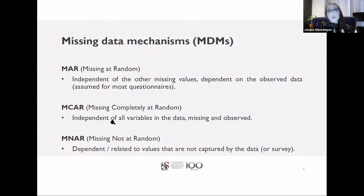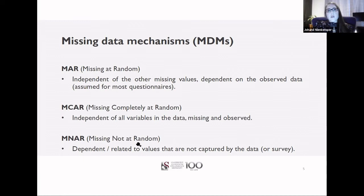Missing completely at random (MCAR) is when missing observations are independent of all variables — both missing and observed. This is quite an extreme case, similar to taking a simple random sample from a population. Then the last one, missing not at random (MNAR), is quite difficult to work with. This is where missing values depend on missing information — it could be due to a response that is missing or a question not observed in the survey. In this presentation, I'll only focus on MAR and MCAR.